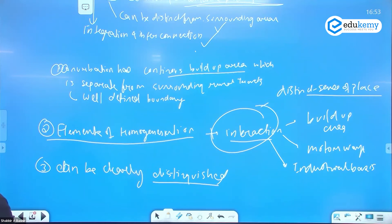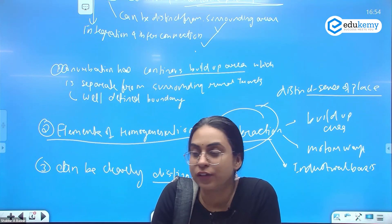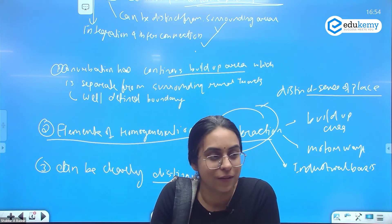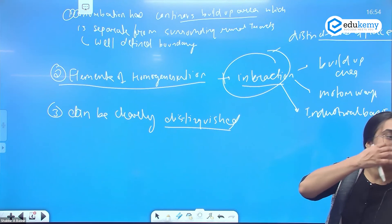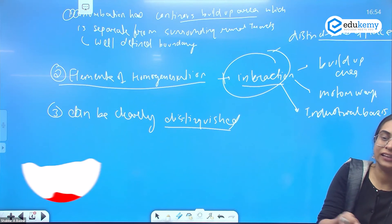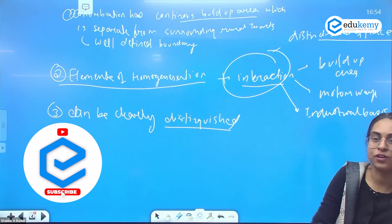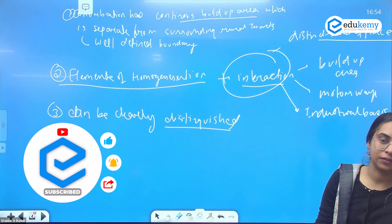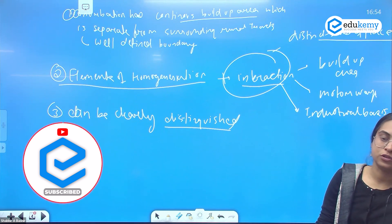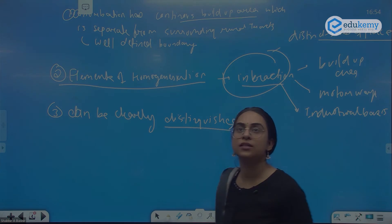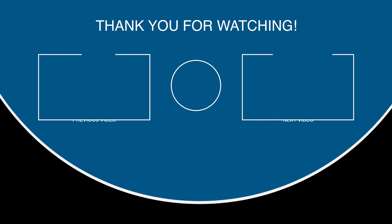How do we conclude that conurbation is a geographical region? Conurbation is very different from other regions like metropolitan regions — it is a distinct type of region and therefore would need distinct planning. You can mention the distinct elements of planning required for conurbation.